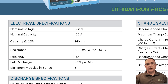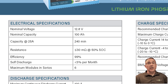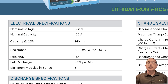Self-discharge. RelyOn LiFePO4 batteries, when disconnected from all current draws, will self-discharge at less than 3% per month. This means you can place batteries in storage for long periods without worrying about capacity diminishing. If you do put your batteries in storage, we recommend disconnecting from all devices and cycling the battery once every 6 months.